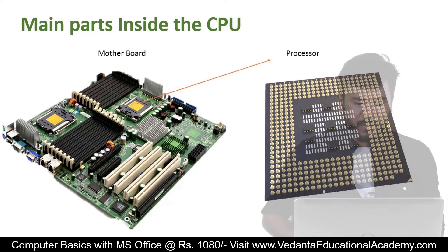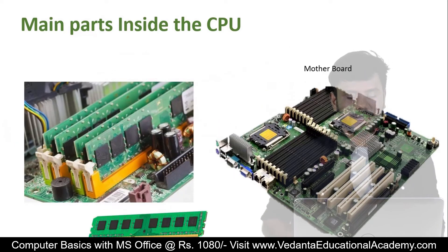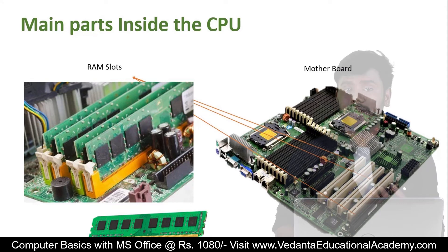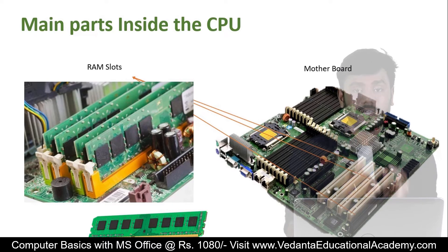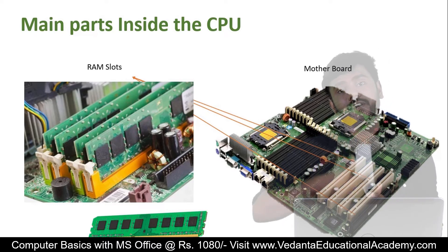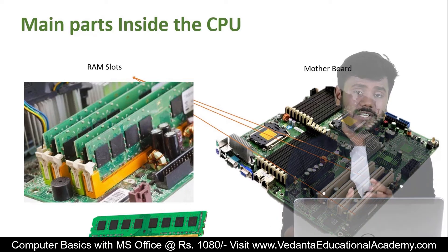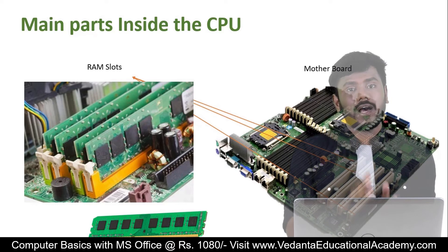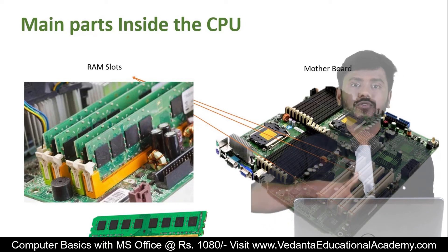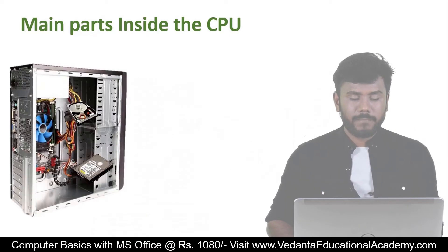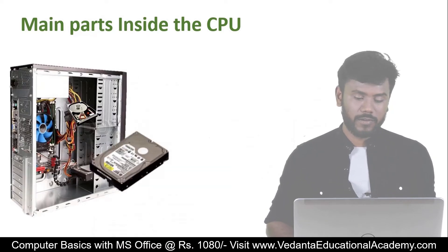After the processor, we have the RAM — Random Access Memory. All currently running applications run from the RAM. When you save data, it is saved to the ROM, which is also known as the hard disk drive. So applications run under RAM, and when you save data from an application it goes to ROM, the hard disk drive.